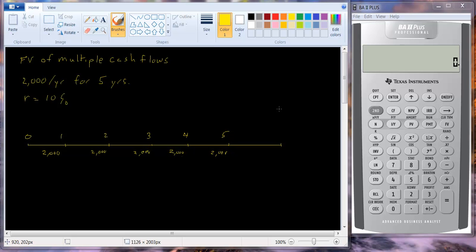So let's think about it. Well, the last $2,000 in year five is just $2,000. We don't have to do anything to it because it's already in its future value terms. It's already in its year five amount. So let's write that down. We've got $2,000 here.